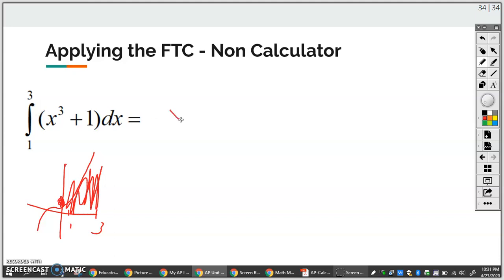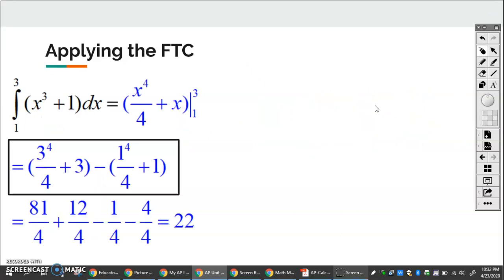So I can just take the integral of each piece. So the integral of X cubed is going to go to X to the fourth over four. The integral of one is X. I'm not going to write the integral symbol anymore because now I'm just evaluating the upper and lower limits. So I'm going to plug in three first. So three to the fourth over four plus three minus. And then I'm going to plug in one. One to the fourth over four plus one. And then you can stop there. I've simplified it on this next slide.